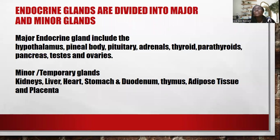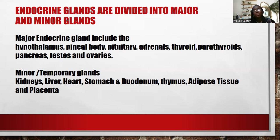Endocrine glands can be divided into major and minor glands. Major glands are those whose primary function is to produce hormones. Minor or accessory glands have other major functions — for instance, the kidneys perform filtration and urine production, but on a part-time basis also produce some hormones. Major endocrine glands include the hypothalamus, pineal gland, pituitary, adrenals, thyroid, parathyroid, pancreas, testes, and ovaries. Minor glands include the kidneys, liver, heart, stomach, duodenum, thymus, adipose tissue, and the placenta during pregnancy.